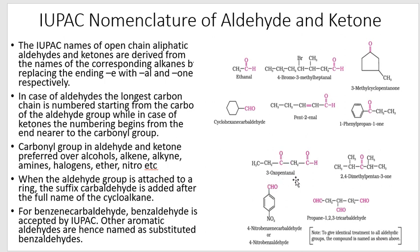So, numbering starts from the preferred end: 1, 2, 3, 4, 5. This gives the name 3-oxopentanal - you can see.